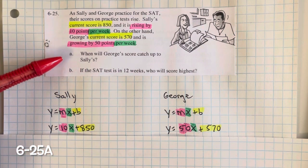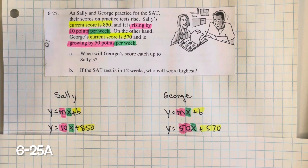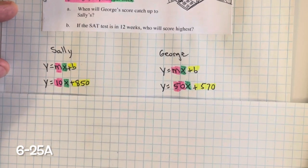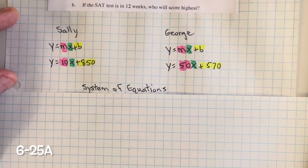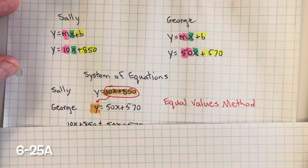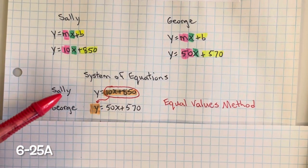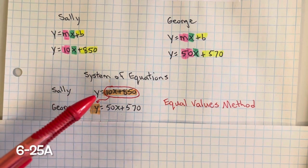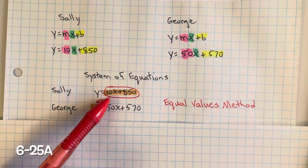Now we have to determine when George's score will catch up with Sally's — that means when will they be equal. One way of finding out when their scores will be the same is by setting it up as a system of equations, and we can do that by using the equal values method.